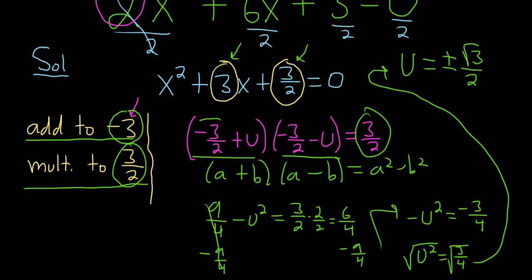But remember, our final answers are of the form negative 3 halves plus u and negative 3 halves minus u. So our final answers, I'll use a different color so you can see it. The final answers are going to be negative 3 halves plus or minus the square root of 3 over 2.